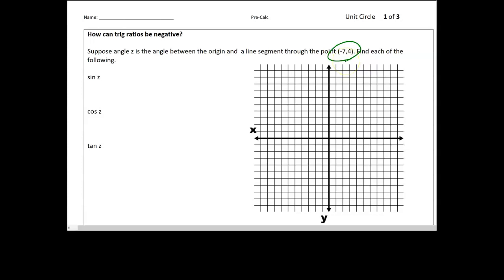All right. What I've given you here is I'm asking you to find the angle between the origin and a line through this point, negative 7, 4. So we'll plot the point. That's about there. Negative 7, 4. And a line segment through the origin would be like that. So we're really looking at this angle as angle z. So notice right away, we have an angle that's bigger than 90 degrees. So this can't really model a right triangle necessarily the same way. So we're getting more abstract.